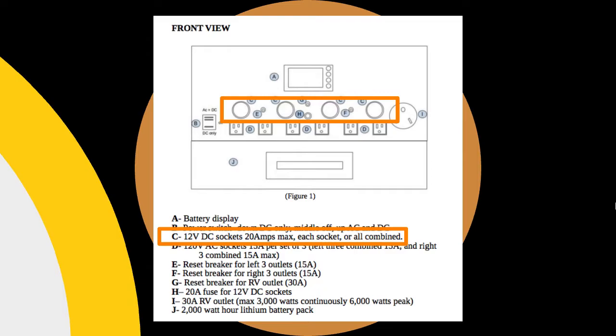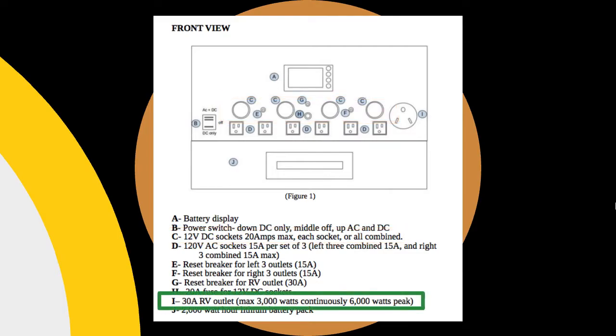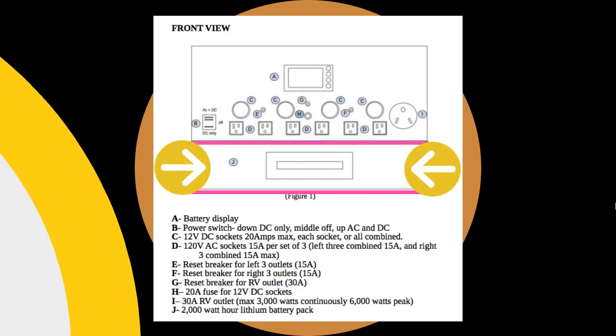Then you have the RV port, which is pretty awesome. That's relatively rare when it comes to solar generators, so that's really nice to have, especially for people who own a camper or RV and use that plug. The other main factor I can see from this diagram is the bottom part, which is labeled J. That is the battery, a lithium battery, 2000 watt hours.